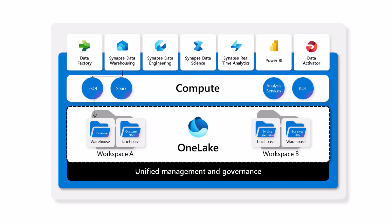Now, if a data scientist wanted to make use of this data, previously they would have had to use a connector, which goes through the T-SQL engine, or they would have had to copy the data out of SQL and into the lake. But with Fabric, the T-SQL engine is natively storing its data in OneLake in Delta Parquet format. This means that data scientists can use the full power of Spark and open source libraries to read the data directly from the data warehouse.